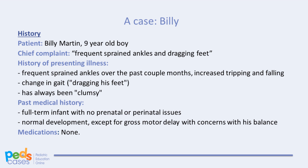To help ground this topic in context, we'd like to introduce you to a patient, Billy, who we will follow throughout these two videos. During your rotation in a family medicine clinic, you meet nine-year-old Billy, who has been brought in by his mother with concerns of frequent sprained ankles over the past three months. His mother says he has been tripping and falling more than usual, and sometimes appears to be dragging his feet. She says Billy has always been a clumsy kid, but has otherwise been healthy. He was a full-term infant with no pre- or perinatal problems. His development has been normal, except for a gross motor delay with concerns about his balance.